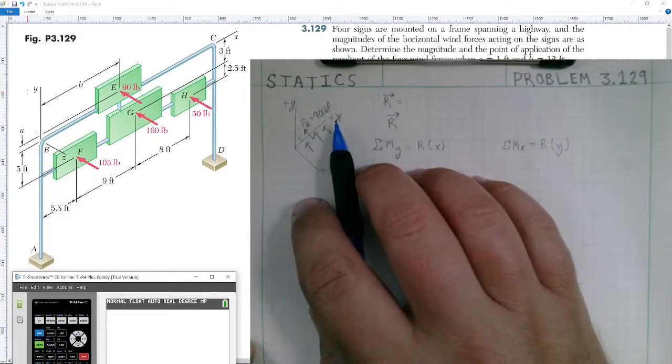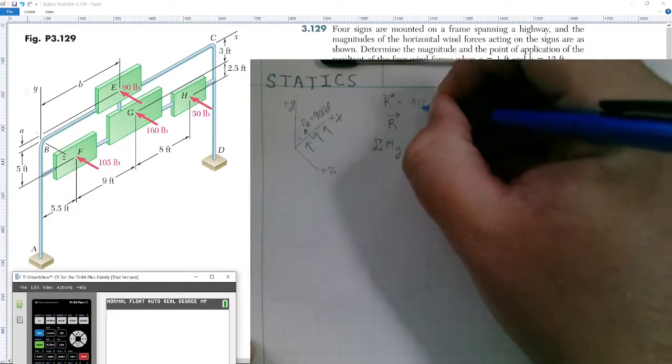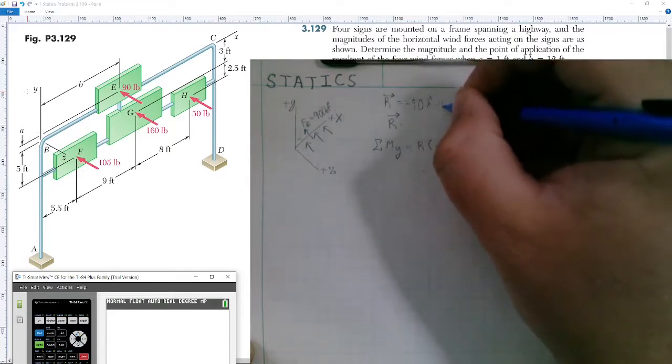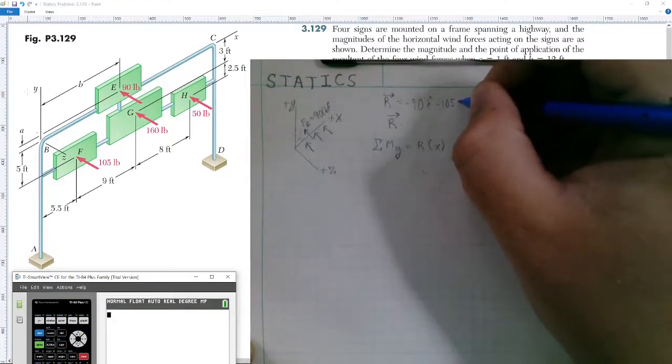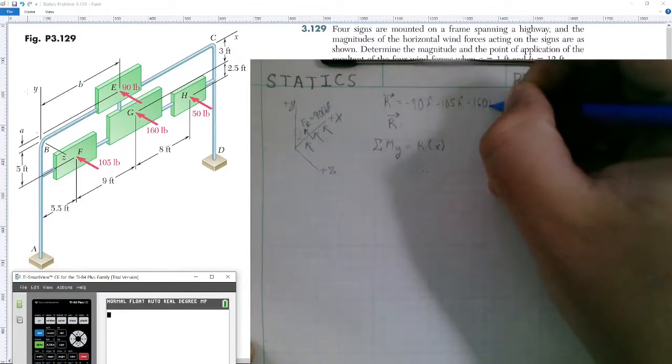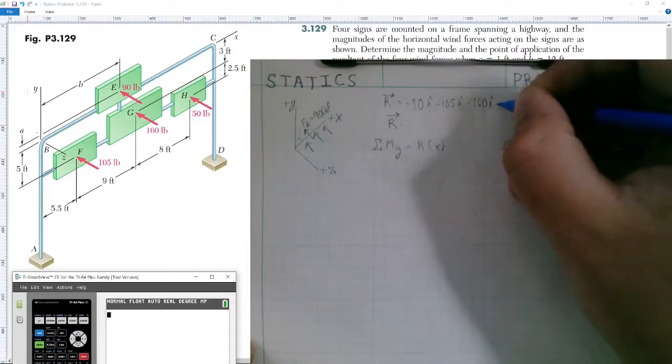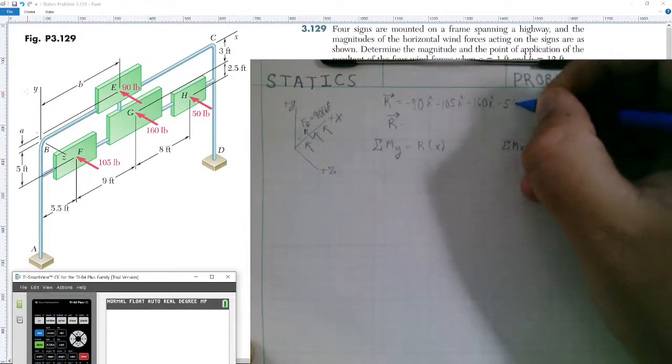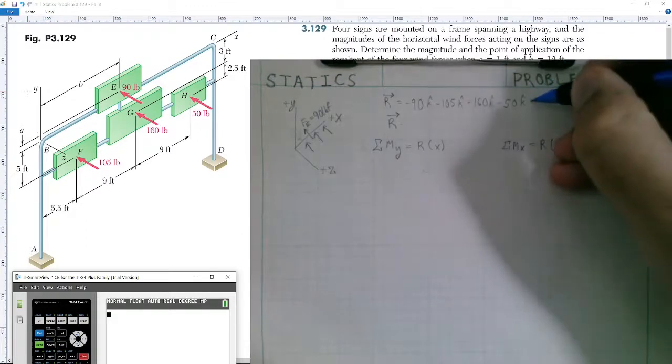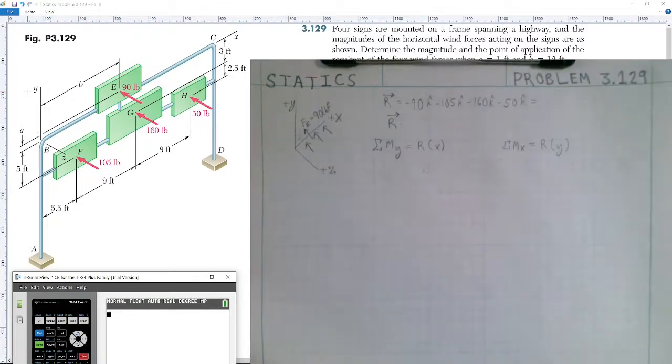It's going to be the sum of all the forces. So we have 90 in the negative K-hat direction, minus 105 in the K-hat direction, minus 160 in the negative Z direction, and then minus 50 as well in the negative K-hat direction.